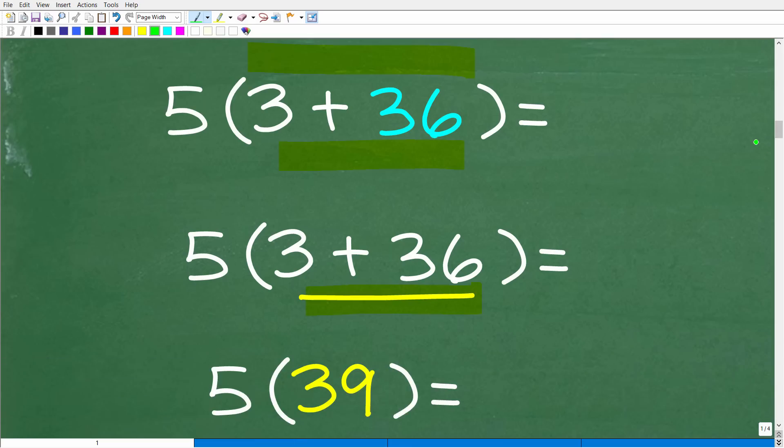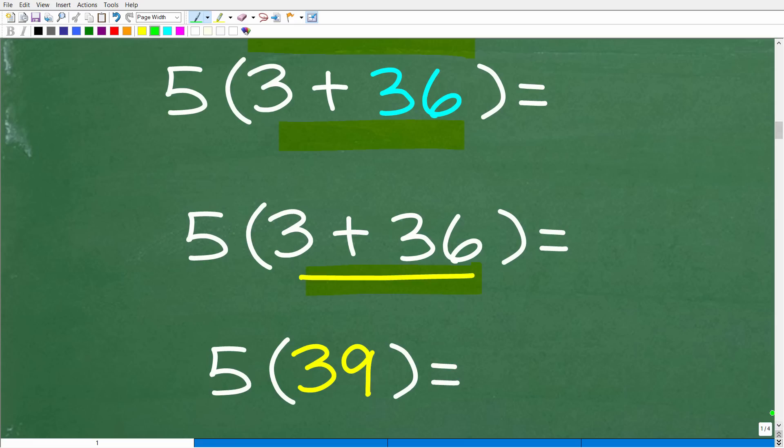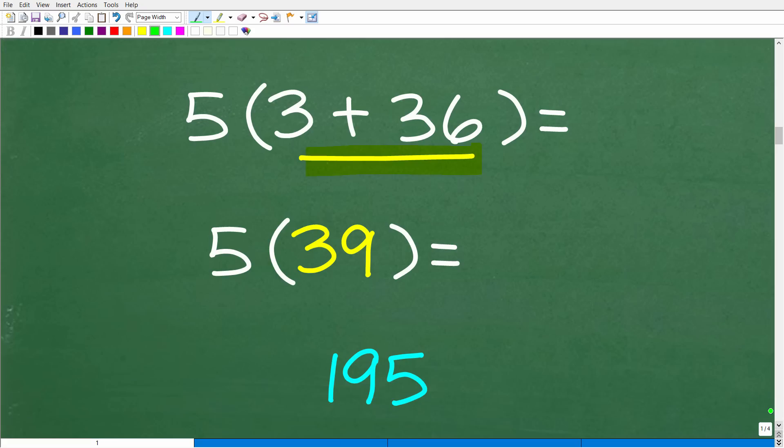All right, so we're almost there. So we have 5 times 39. And now we're talking about basic multiplication. So 5 times 39, of course, is 195, which is our right answer. Now, for those of you that did get this right, well again, I congratulate you on either being lucky that you did the division first or you actually understood PEMDAS. That's fantastic.